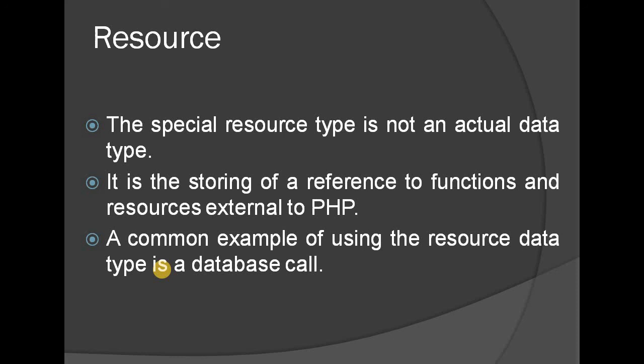Resource is a special type that holds an external link — for example, a link to a database. It is not a standard data type but refers to an external resource. You can declare a resource variable like opening a file.